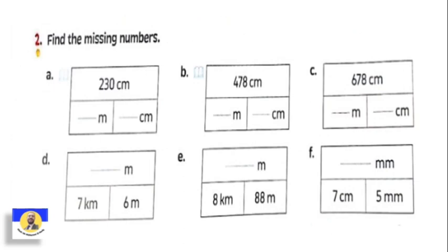Question number two: find the missing number. Pay attention — each one equals some of the other. Here we have two hundred thirty centimeters and we want to separate it: write some in the meter column and the remainder in the centimeter column. One meter has one hundred centimeters, so the digit in the hundreds place — which is two — goes to meters, and the remaining thirty goes to centimeters.